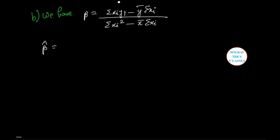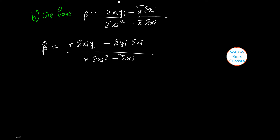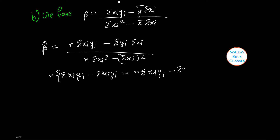Thus beta cap equals n summation x_i y_i minus summation y_i summation x_i, whole divided by n summation x_i squared minus summation x_i whole squared. Now, n summation x_i y_i minus summation x_i y_i is equal to n summation x_i y_i minus summation x_i y_i minus summation x_i.